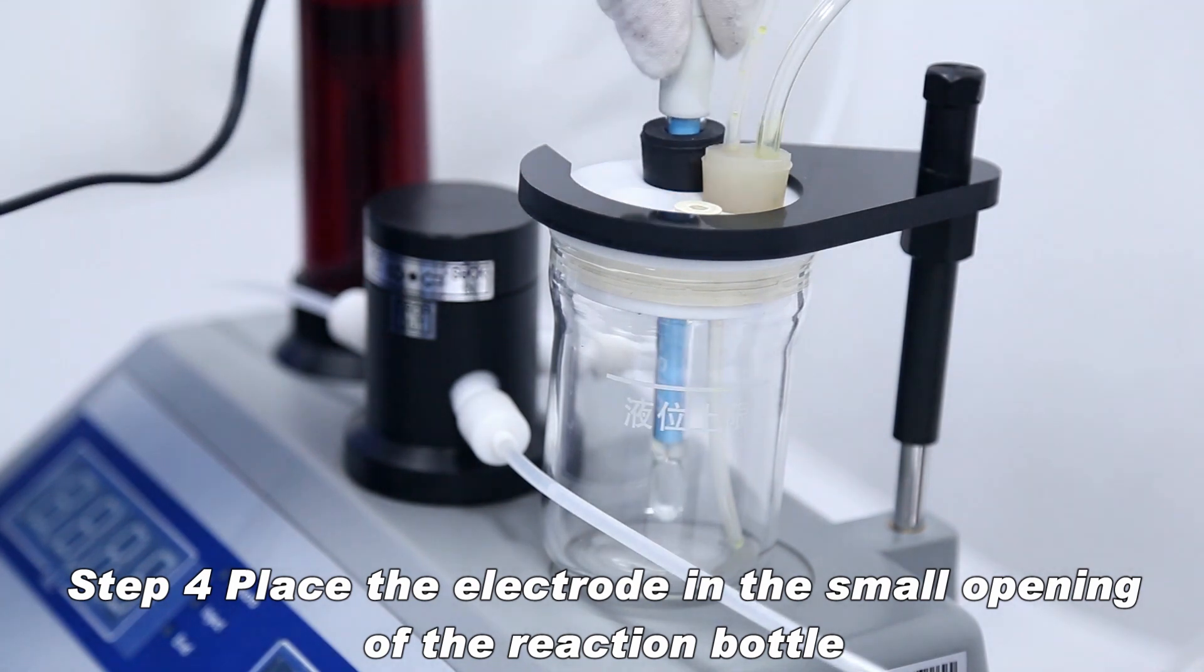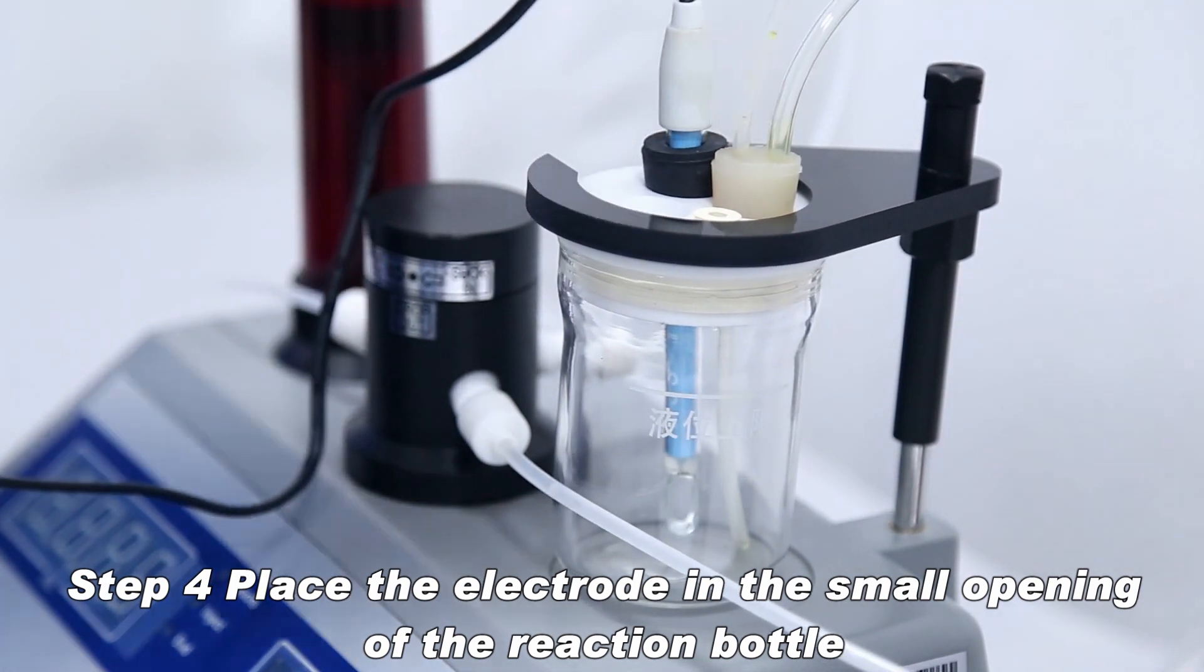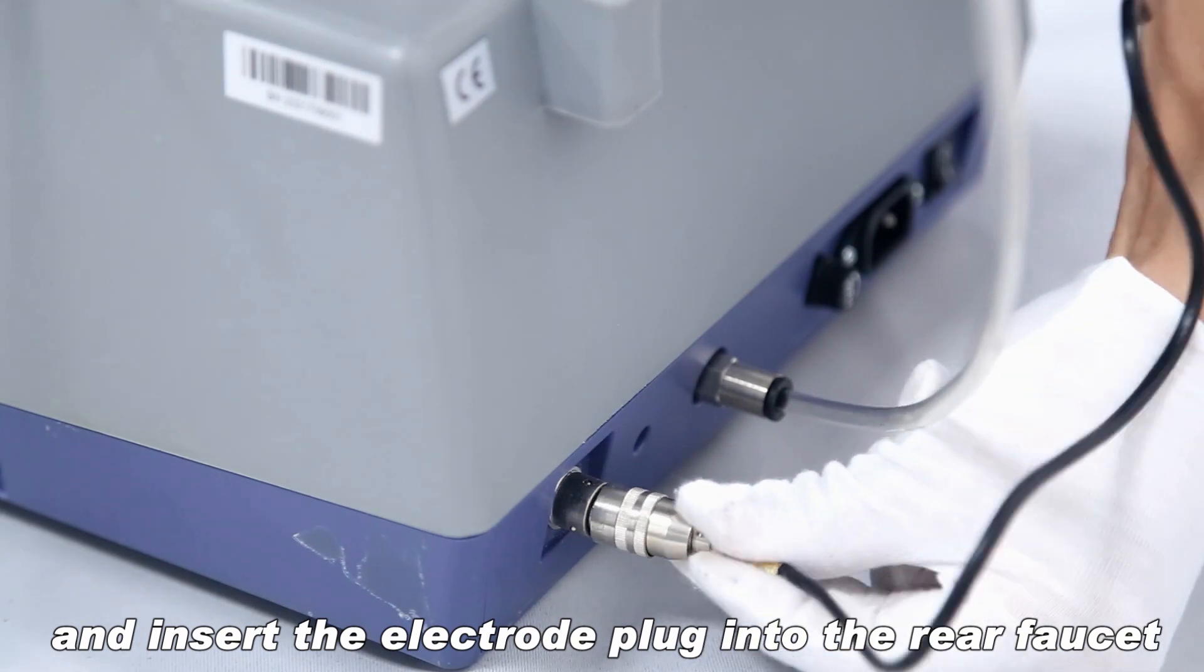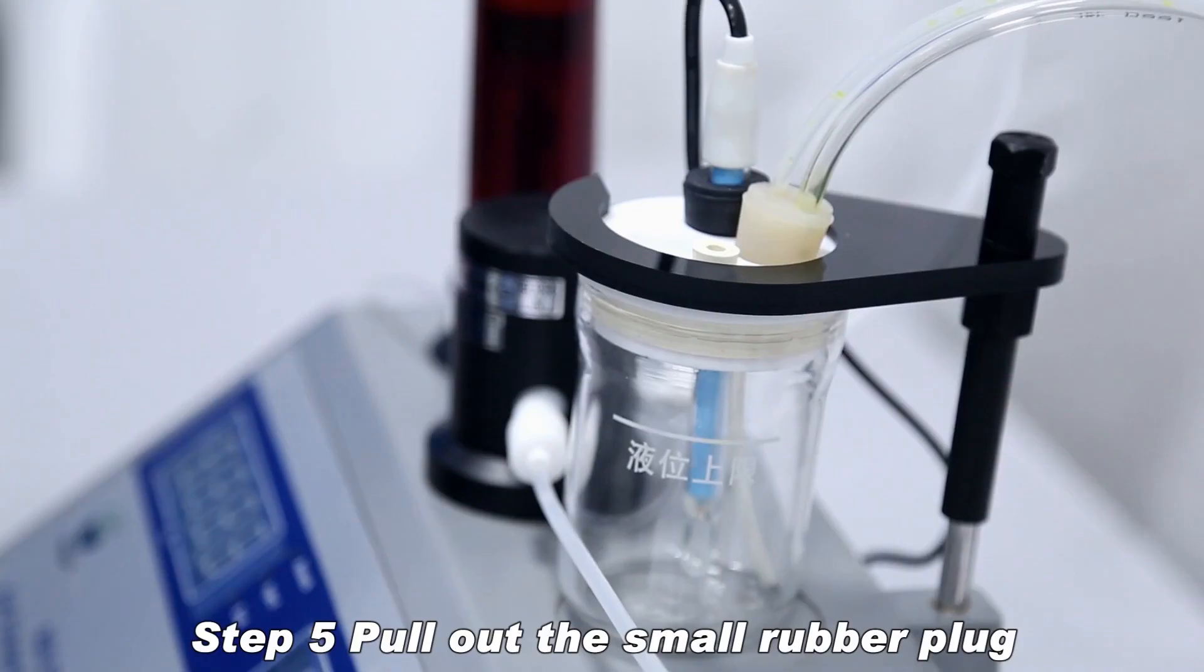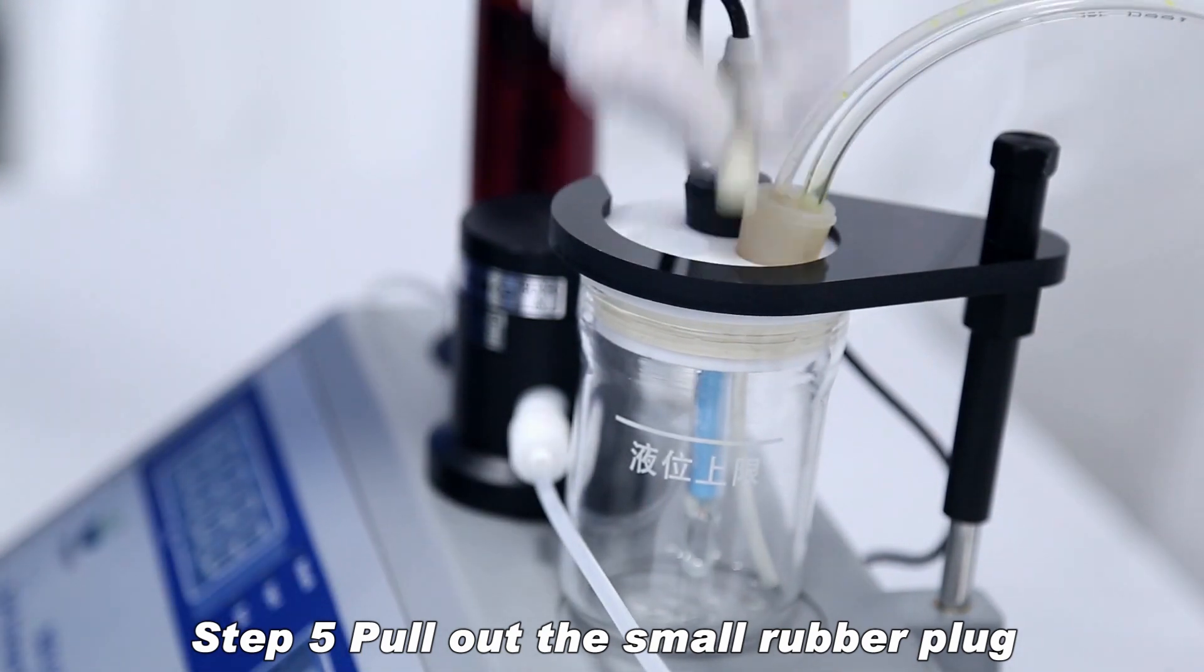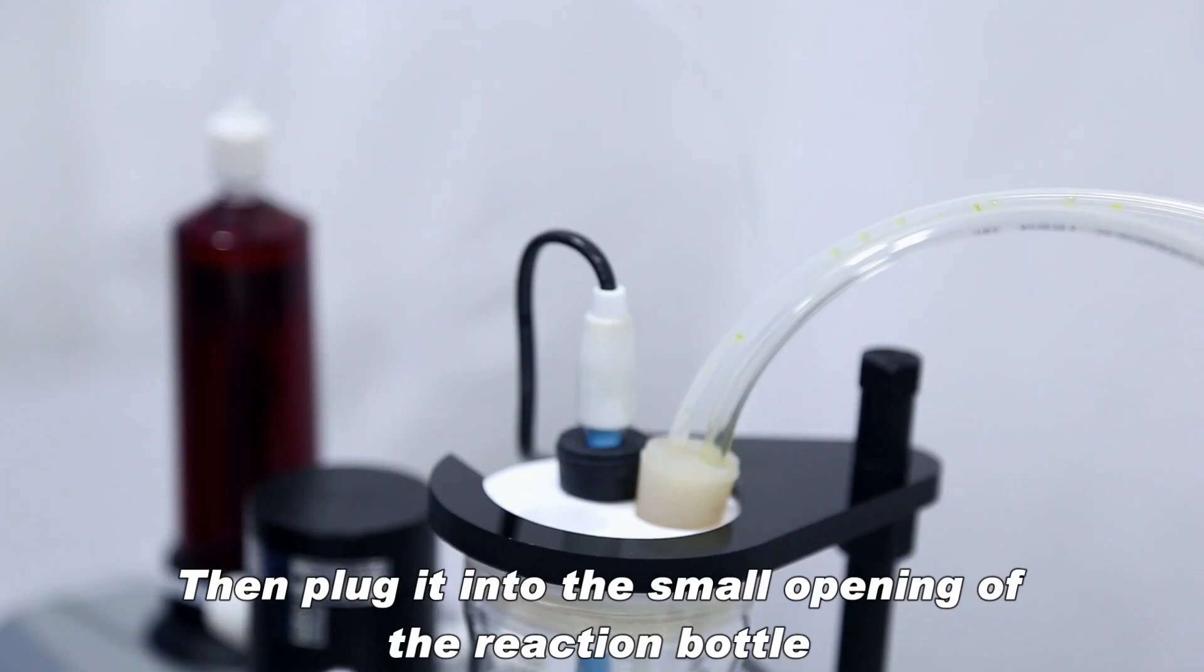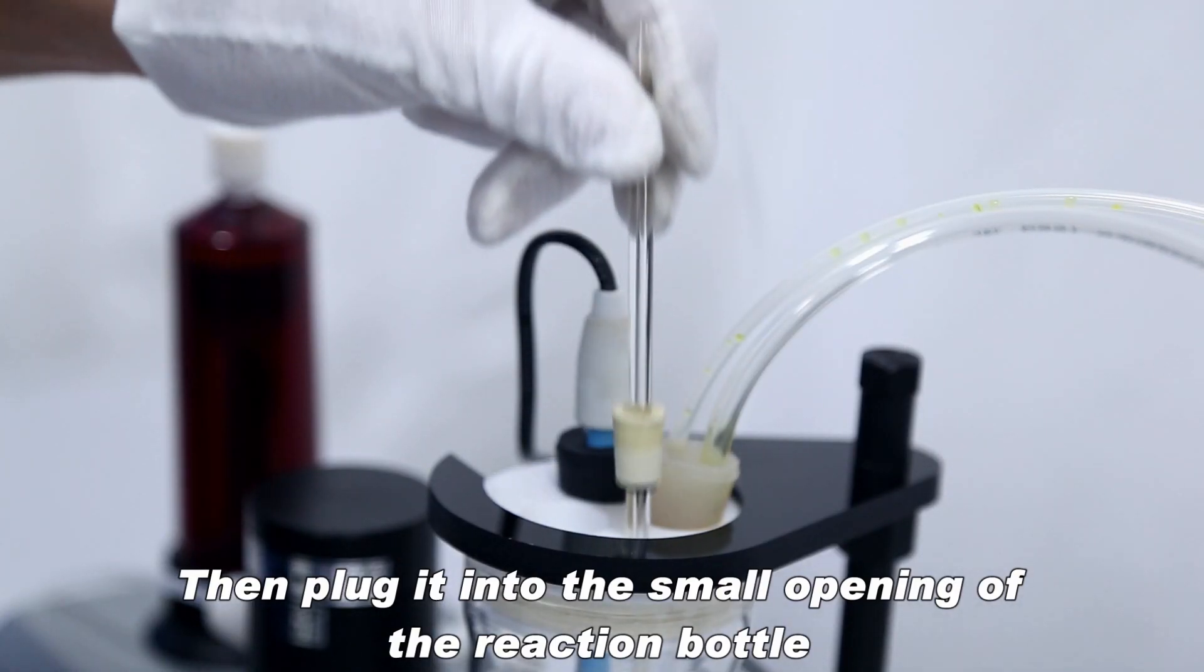Place the electrode in the small opening of the reaction bottle and insert the electrode plug into the rear socket. Pull out the small rubber plug and insert the dropper into the small hole of the rubber plug, then plug it into the small opening of the reaction bottle.